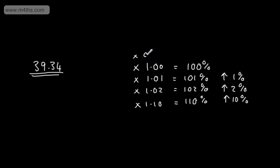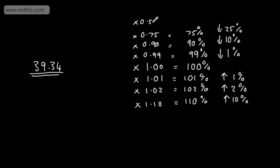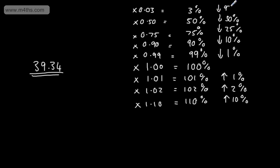What we're looking at are multipliers. Multiplying by 0.99 gives a 1% reduction, or 99% of the original. Multiplying by 0.90 decreases by 10%, which is 90% of the original. Multiplying by 0.75 gives 75% of the quantity — a decrease of 25%. Multiplying by 0.5 is a decrease of 50%. If we wanted to decrease by 97%, we multiply by 0.03, giving 3% of the original.